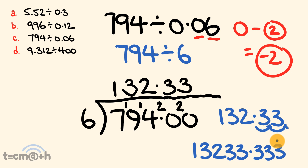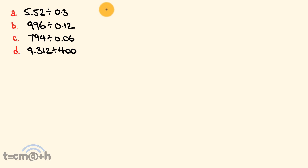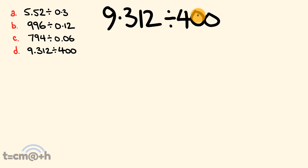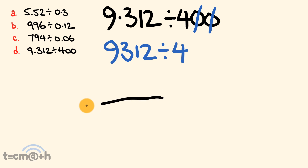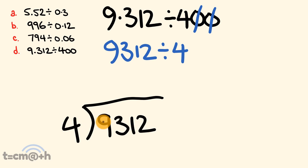Now let's get to the last question. We have 9.312 divided by 400. As you can see, the answer is going to be 0.00-something because 9 is much smaller than 400, but let's just treat it the same. We're going to work out 9312 divided by 4 — ignoring the zeros for now and coming back to them in a bit.